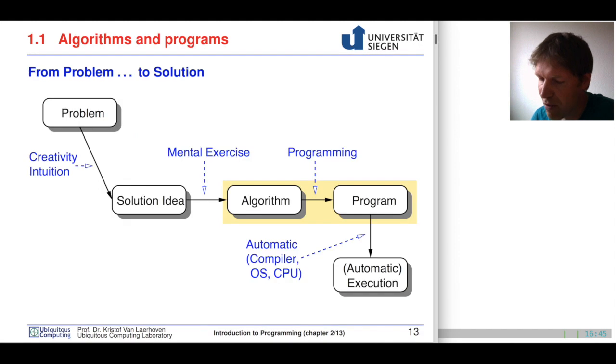If you have a problem and you want to solve this with a computer, you'll need to do a couple of steps. The first couple of steps are the most important ones. You require intuition, creativity to present a certain idea, a certain solution that you can then convert into an algorithm. This is a mental exercise that requires your brain. From the algorithm, you can program this into a program that requires programming skills. Once you're there in this yellow box, this is what we're going to do in this course.